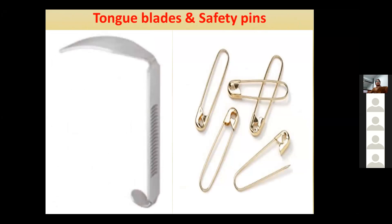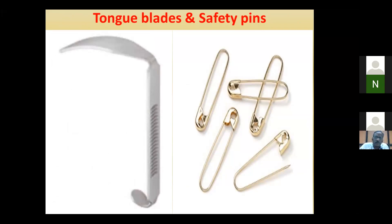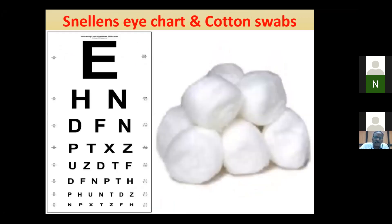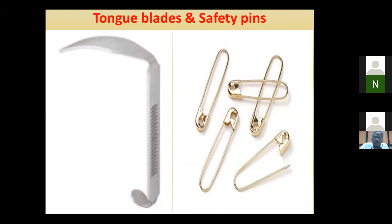Tongue blades and tongue depressors are helpful for identifying any pathology in the pharyngeal wall and back of the tongue. When you press the tongue depressor down, you can visualize all the structures of the pharynx. Cotton is concerned with light touch, and the safety pin is used for pain sensation.